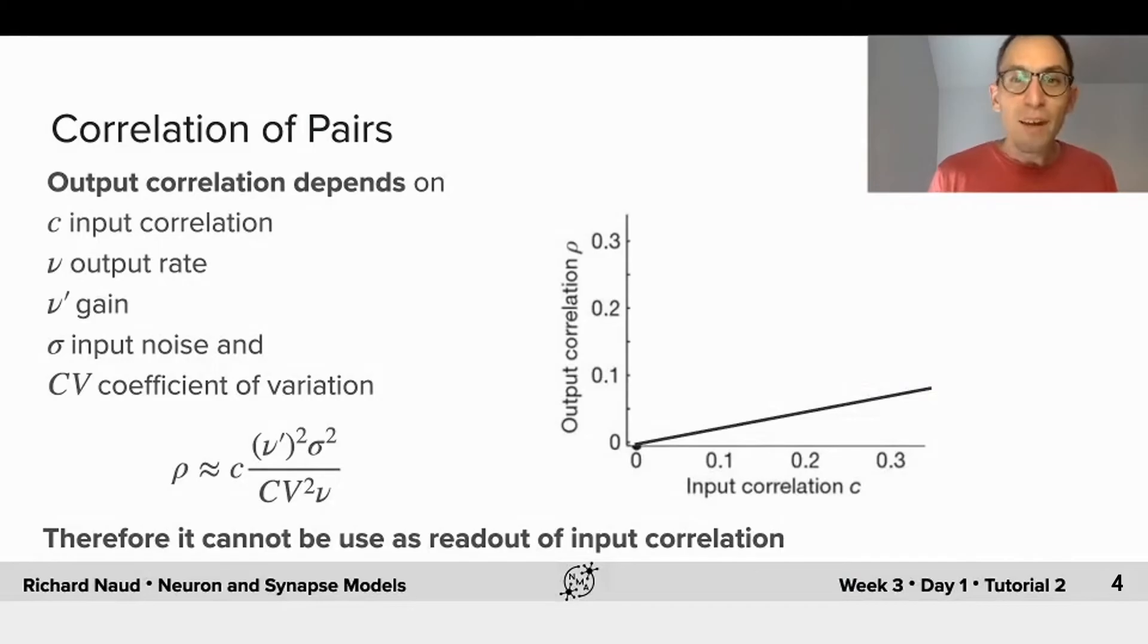Here I show the output correlation of two leaky integrate and fire neurons with various degrees of input correlation as a function of their input correlation. You see that clearly the output correlation is scaling with the input correlation. So it's as though we could figure out what the input correlation was as soon as we know the output correlation.